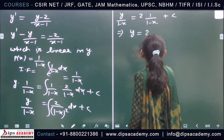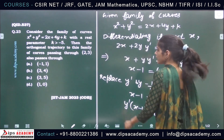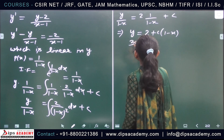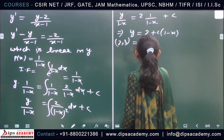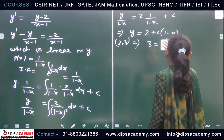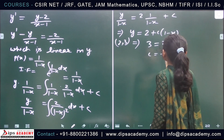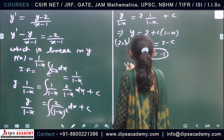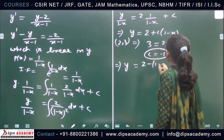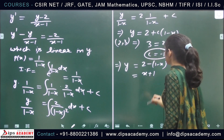It is given that the orthogonal trajectory passes through the point (2, 3). Substituting x = 2, y = 3: 3 = 2 + c·(1 − 2) = 2 − c, so c = −1. Therefore the orthogonal trajectory is y = 2 − (−1)(1 − x) = x + 1.